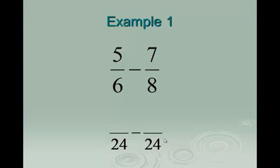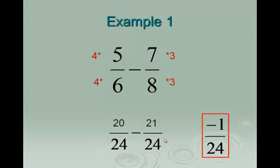Now look at the first fraction, 5 over 6 minus 7 over 8. Originally our denominator was 6, now it's 24. What did we multiply 6 by to turn it into 24? Times 4. That means we multiply the whole fraction by 4, and the new top will be 20. On the second fraction, what did we take 8 by to turn it into 24? We multiply it by 3, giving a new top of 21. Now that we have a common denominator, we keep it and subtract the tops: 20 minus 21 is negative 1 over 24. Final answer.